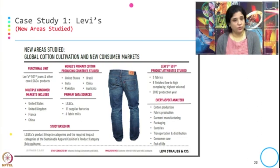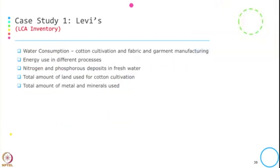Considering the LCA inventory: from the aspects identified previously, what comes under the LCA inventory is water consumption — both in cotton cultivation and fabric and garment manufacturing. Then energy used in the different manufacturing processes. Then nitrogen and phosphorous deposits in fresh water, which accounts for eutrophication. Then the total amount of land used for cotton cultivation, giving the land footprint, and total amount of metals and minerals used to understand the raw material for the product.